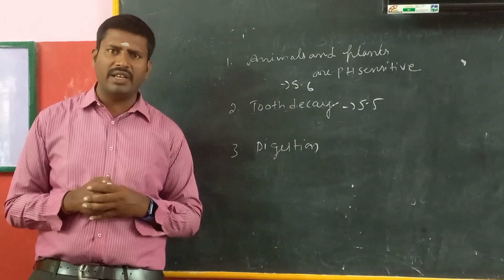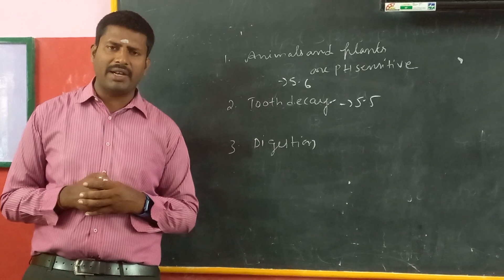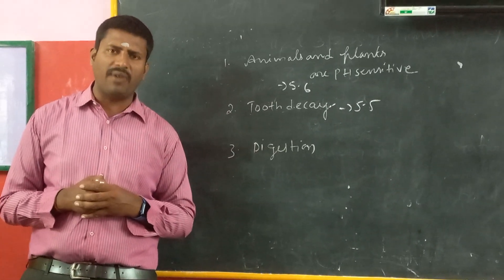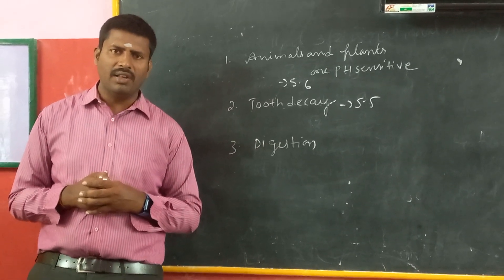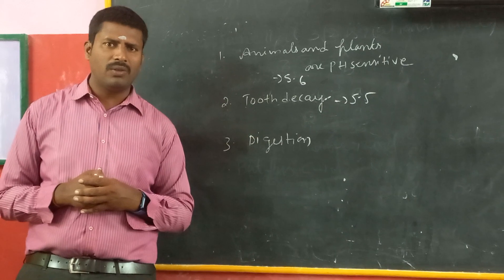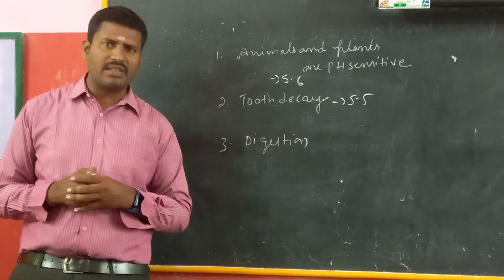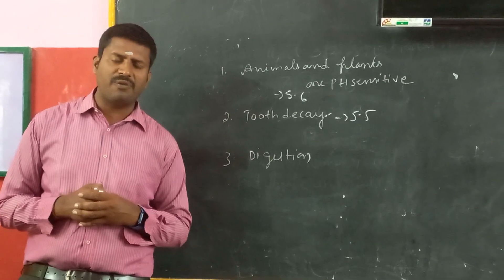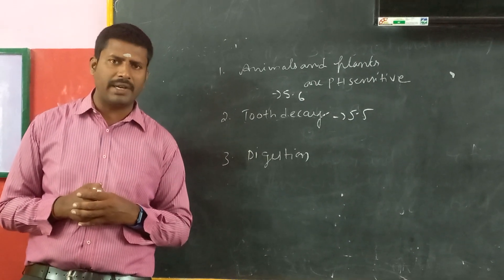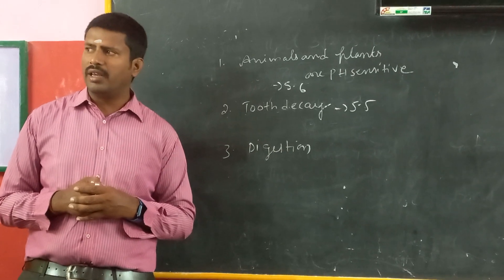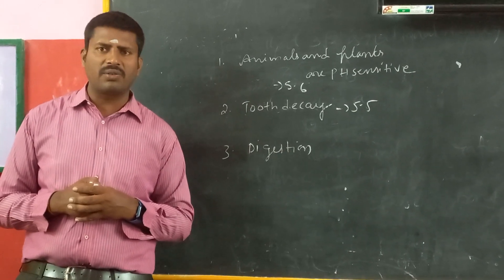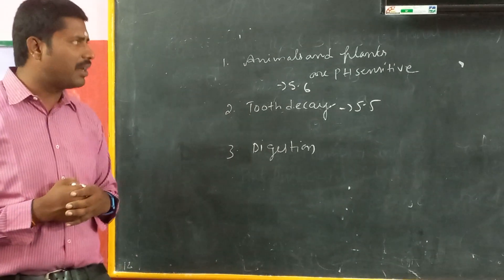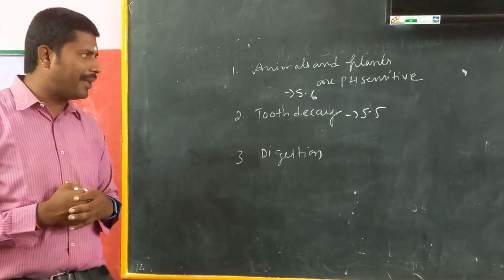Because of more acidity, it leads to the death of aquatic animals. Plants cannot grow in the case of acid rain — when acid rain falls, plants may die immediately. In this way, we can say that animals and plants are pH sensitive.